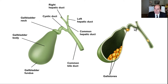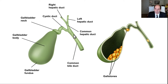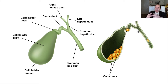Sometimes a gallstone can pass through the cystic duct and become lodged in the common bile duct. The common bile duct passes through the head of the pancreas and drains out into the bowel. A stone stuck in the cystic duct causes back pressure on the gallbladder — that's called acute cholecystitis. A stone in the common bile duct will cause a blockage of bile exiting from the liver and gallbladder, leading to stasis, and you can get infection. Infection of the common bile duct is called cholangitis, and it can ascend up into the liver — that's ascending cholangitis.